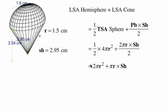So we have πr times the slant height. Here's our final version of the formula: 2πr² plus πr times the slant height. I'm going to feed in what we know: the radius is 1.5 and the slant height is 2.95.